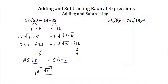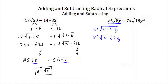Here we have x squared times the square root of 8y minus 7x times the square root of 18y cubed. Let's simplify the first term: x squared times the square root of 8y. I can break 8 into 4 times 2, so this is x squared times the square root of 4 times the square root of 2y. The square root of 4 is 2, giving us 2x squared times the square root of 2y.